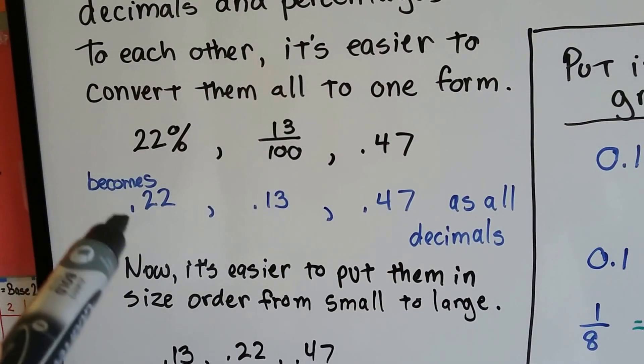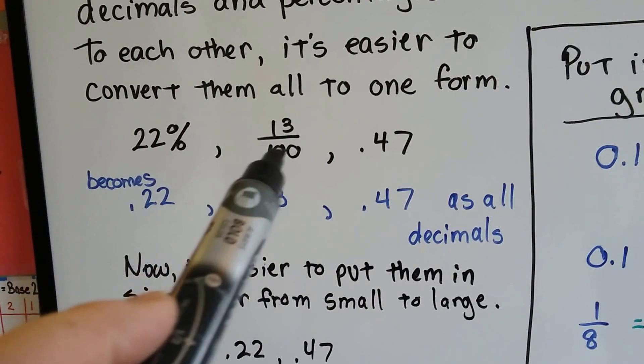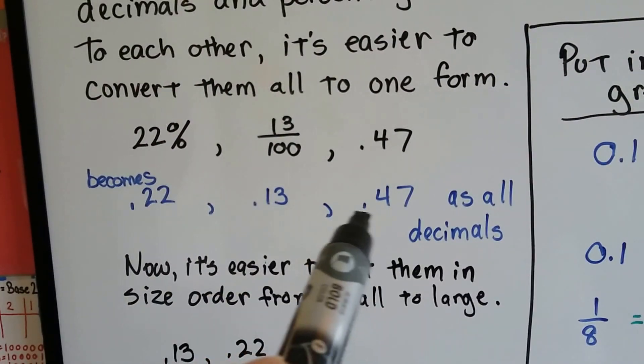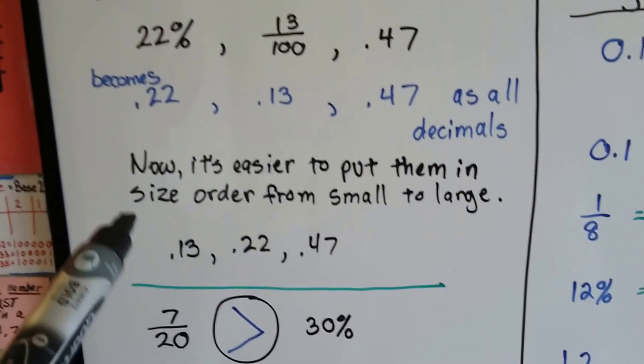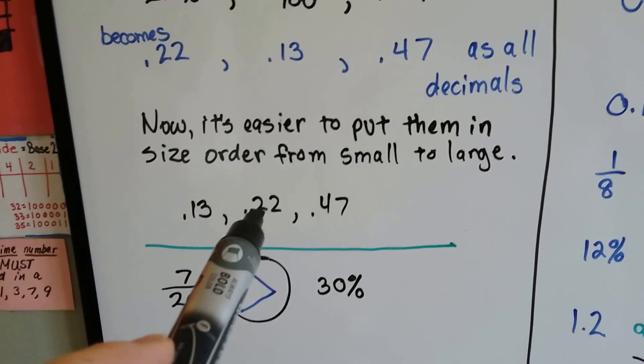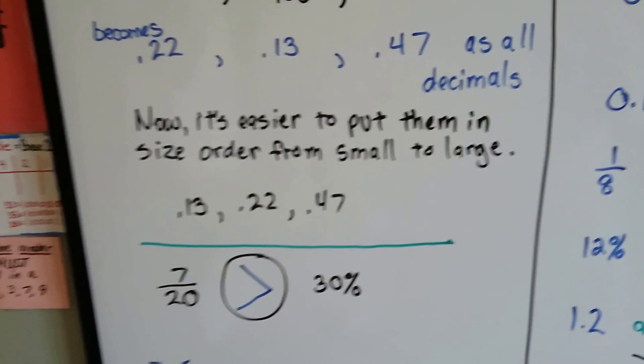then the 22 percent becomes 0.22, the 13 hundredths becomes 0.13, and this one is already as a decimal. So now it's easier to put them in size order from small to large. We know 13 is smaller than 22, which is smaller than 47.